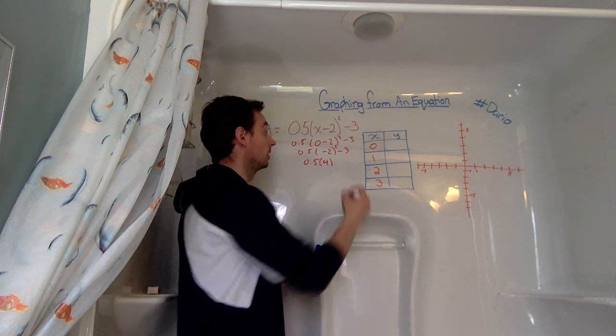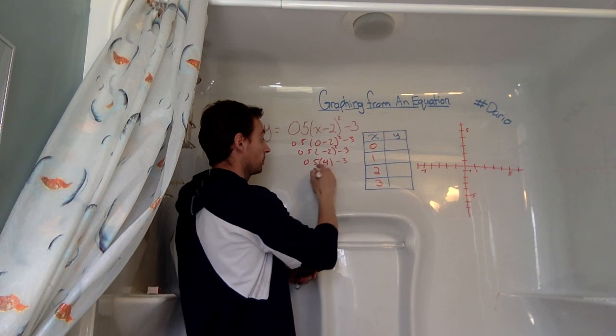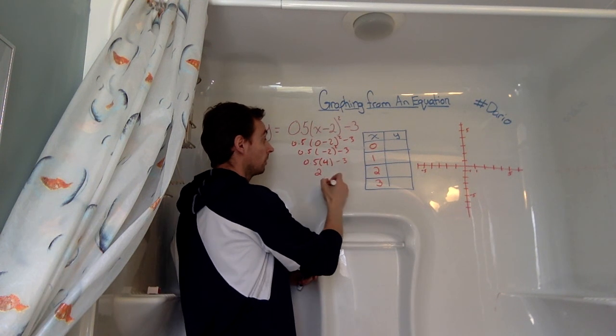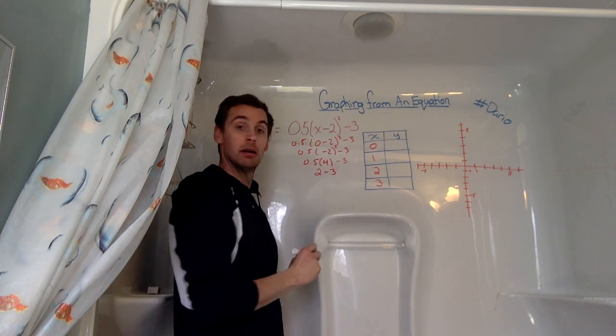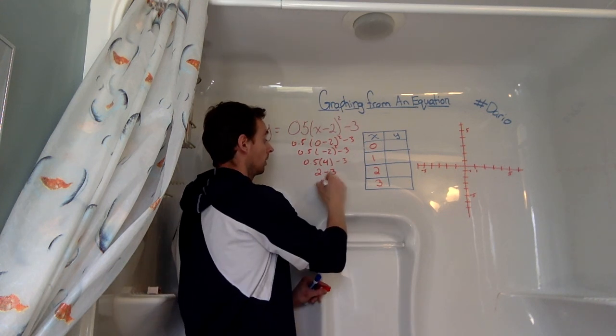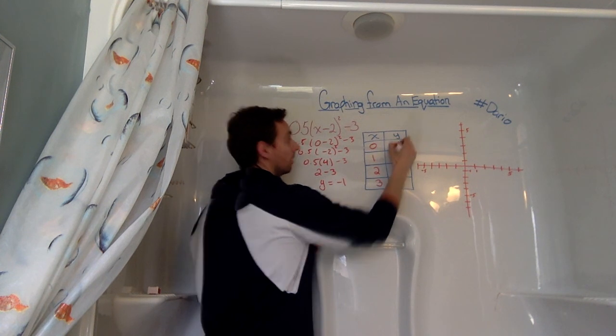And now we move on to our multiplication and division. In this case, we have multiplication, so 0.5 times 4, that gives us 2. And then 2 minus 3 gives us negative 1. So I'm going to take that, and I can plug it in right here.